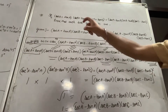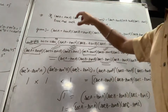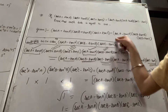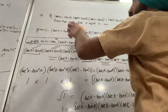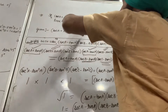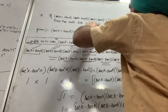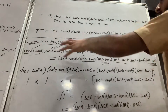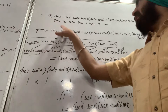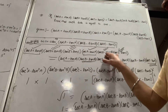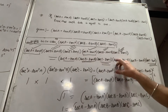We have both sides given. We need to prove both the left side and right side are equal to 1. What we do is multiply both sides by the opposite sign terms — (sec A - tan A)(sec B - tan B)(sec C - tan C) — on the left side, and similarly on the right side.